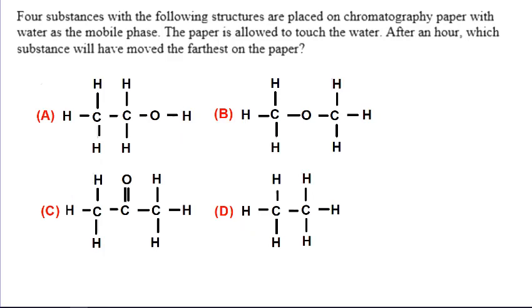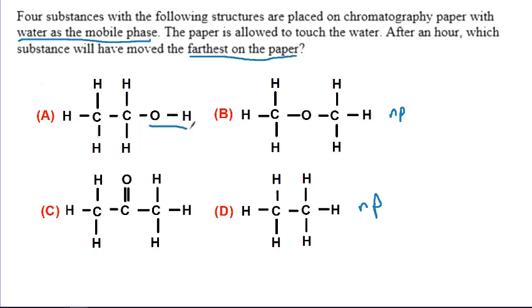One more question: water was the mobile phase, which is polar. After an hour, which substance would have moved the farthest on the paper? If it's moving the farthest, it wants to travel with the water, so we're looking for the most polar substance, most similar to water. A and C have polarity, but A can hydrogen bond while C can only accept hydrogen bonds. So A is the most similar to water and would have traveled the furthest.